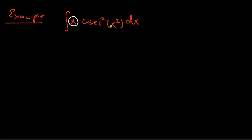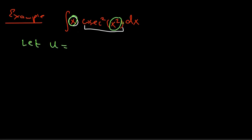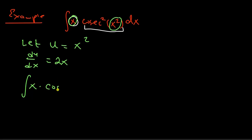We have two parts in the integral: x and cosec squared of x squared. If you look more carefully, x squared — if you take its derivative — gives you x. So we have a function and its derivative. U-substitution is going to be helpful here. We let u equal to x squared, so the derivative is 2x. I rewrite the integral as the integral of x times cosec squared of u, and for dx I write du divided by 2x.